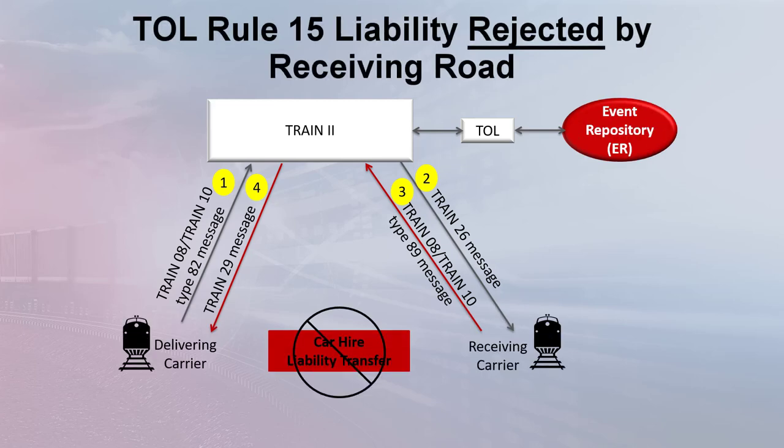This chart illustrates the data flow when the TOL request is denied. First, a TRAIN-08 message is sent to Railink by the delivering carrier advising that interchange cannot be accomplished. Second, a TRAIN-26 message is sent by Railink to the carrier that allegedly cannot accept cars in interchange, advising that Rule 15 relief has been requested. Third, a TRAIN-08 message is sent to Railink by the carrier that allegedly cannot accept cars, advising that the carrier can accept cars in interchange. Fourth, a TRAIN-29 message is sent to the delivering carrier by Railink advising that the Rule 15 request has been denied, and CarHire liability will not be transferred.